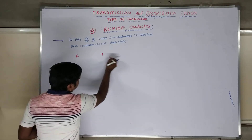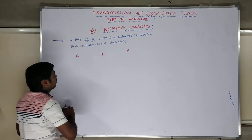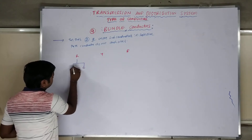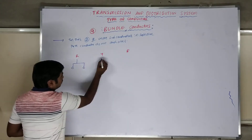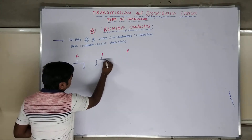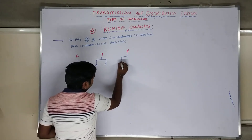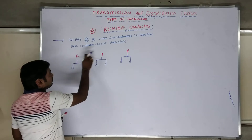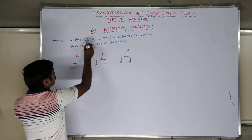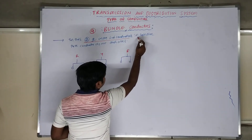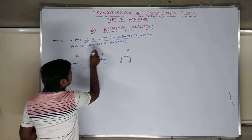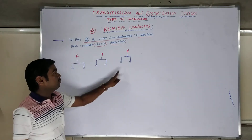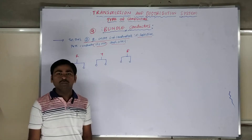Let us explain with an example. We have R-phase, Y-phase, and B-phase. R-phase will have two sub-conductors, Y-phase will have sub-conductors like this, and B-phase will have sub-conductors like this. In each phase we have two sub-conductors, and these conductors do not touch each other. Such a conducting system is called a bundled conductor.